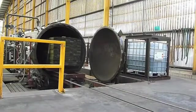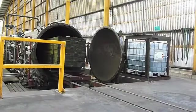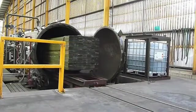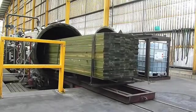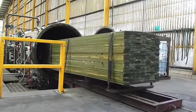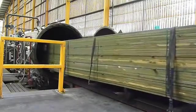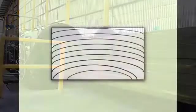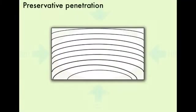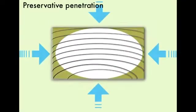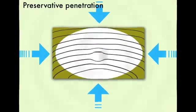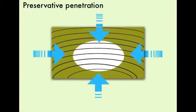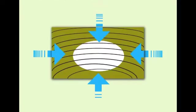High pressure treatments have the potential to achieve a high level of penetration of the preservative into the timber. The actual penetration will depend on the heartwood-sapwood ratio of the timber as well as the permeability of the species. For instance, a greater penetration will be achieved with a permeable species such as pine against a more resistant species such as spruce.